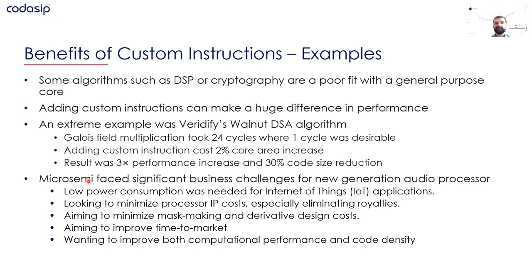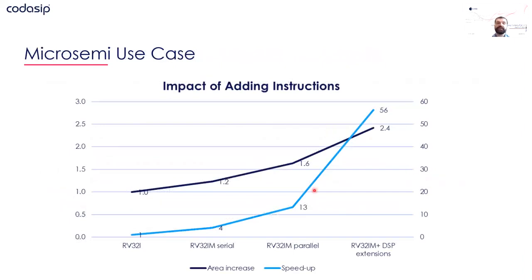Another example is MicroSemi, related to audio processing. They needed a CPU with DSP acceleration for audio, with requirements for low power, small area, and a fast solution. We did several iterations, starting with the base configuration using standard extensions, which gave roughly the same performance as their previous generation.